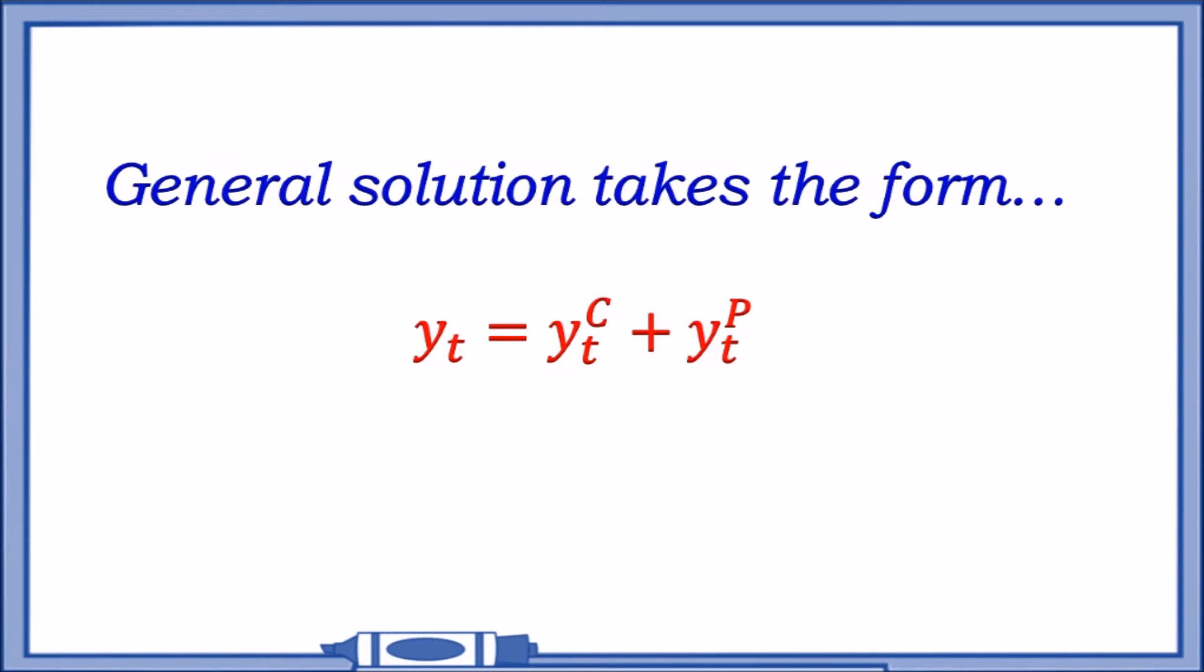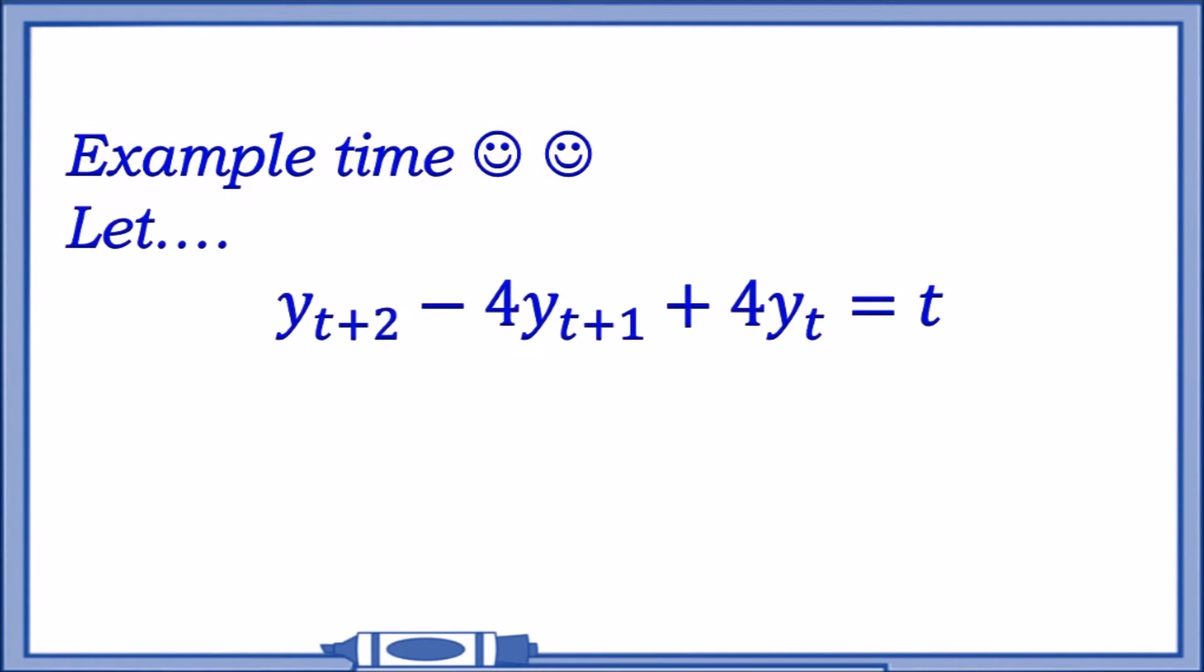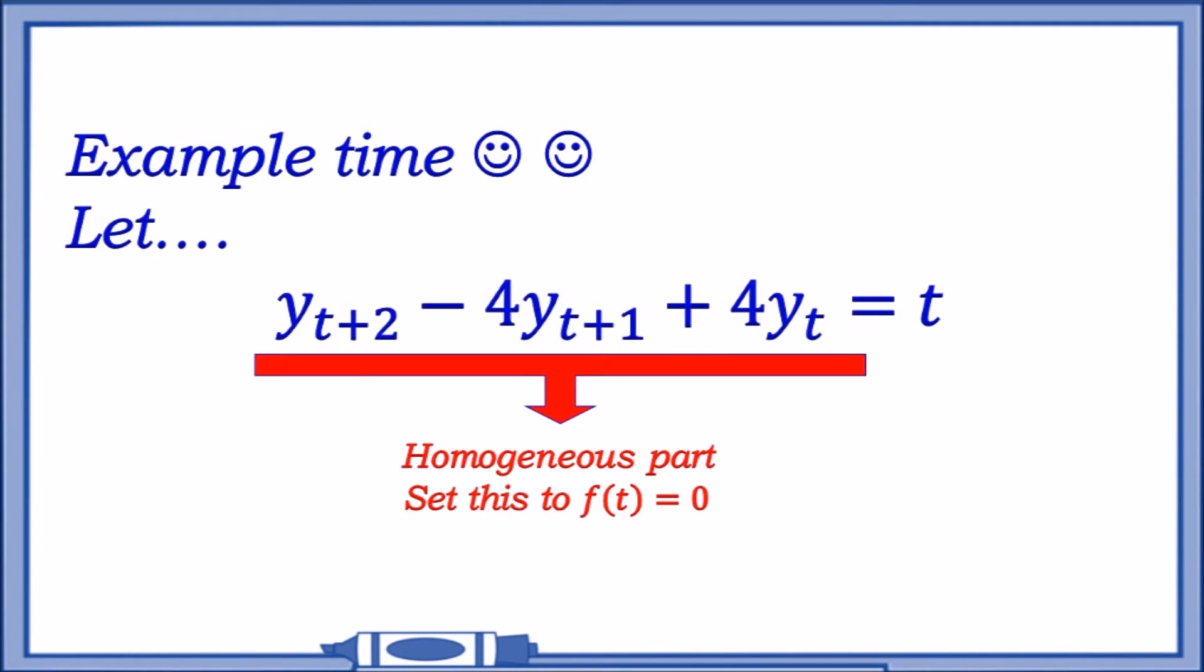Let's jump straight into an example. Suppose we let y(t+2) - 4y(t+1) + 4y(t) = t. We've got the homogeneous part on the left side if it equals zero, and the inhomogeneous part which includes the t.